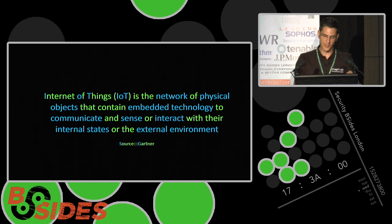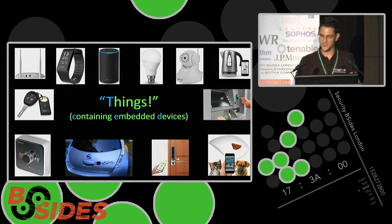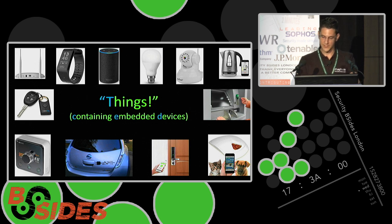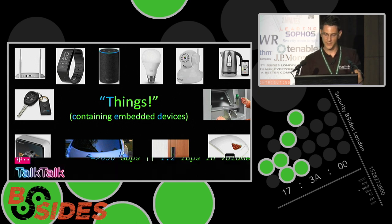A quick definition from Gartner: the Internet of Things is the network of physical objects that contain embedded technology to communicate and sense or interact with their internal states or the external environment. In other words, 'things' — wearable devices, wireless capabilities, RFID, proximity location detection, controlling lights and sound — things we're all familiar with in everyday life.